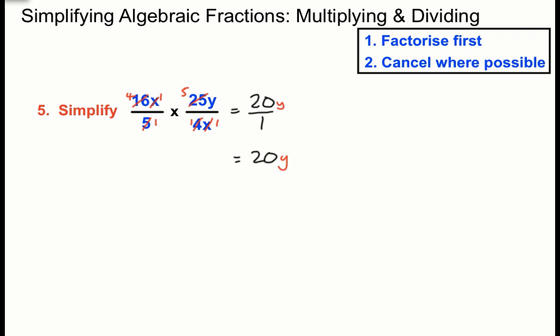I've already redone this question once. Okay, so we've got a 20y on the top and that's over 1 so we don't really need to write that bottom one in. Okay, keeps you humble when you make mistakes, doesn't it? Anyway, so we cancelled down anything we could from the bottom to the top and we put the little ones everywhere. But I just didn't notice that y there. Anyway, be careful.